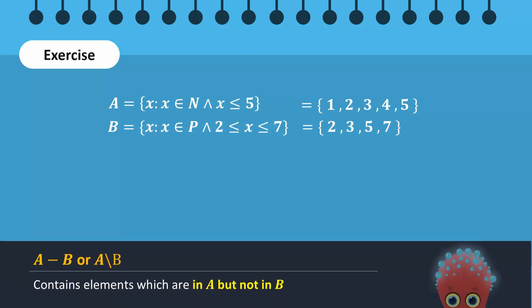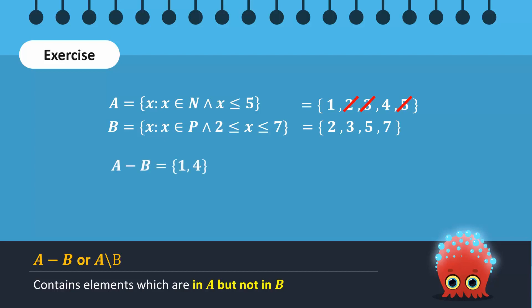A difference B will include elements which are contained in set A but not in set B. Of the elements in set A, 2, 3, and 5 are also in set B, while 1 and 4 are not. Hence, A difference B contains the elements 1 and 4.